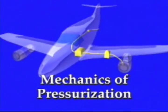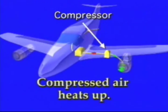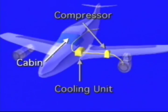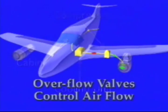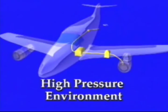What are the basic mechanics of pressurization? Ambient air is introduced into a compressor. Once the air is compressed, it heats up rapidly. The heated air is then sent through a cooling unit and introduced into the cabin. By use of overflow valves, the air comes in quicker than it leaves and creates a high-pressure environment.